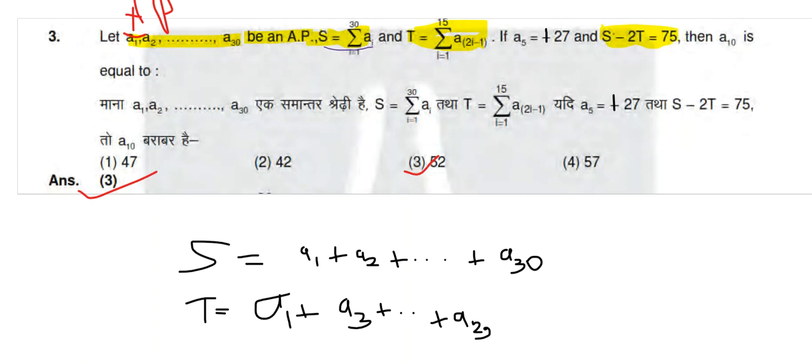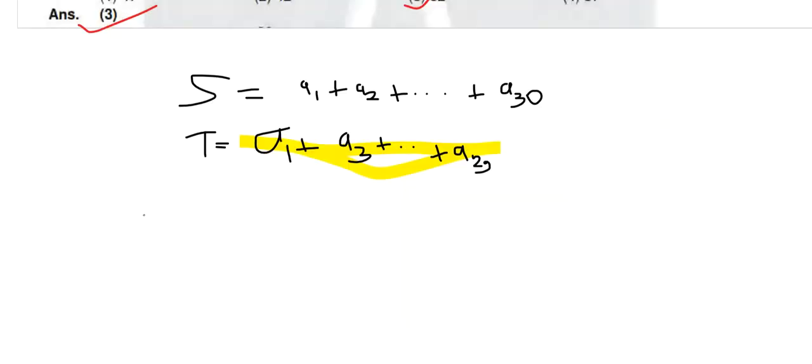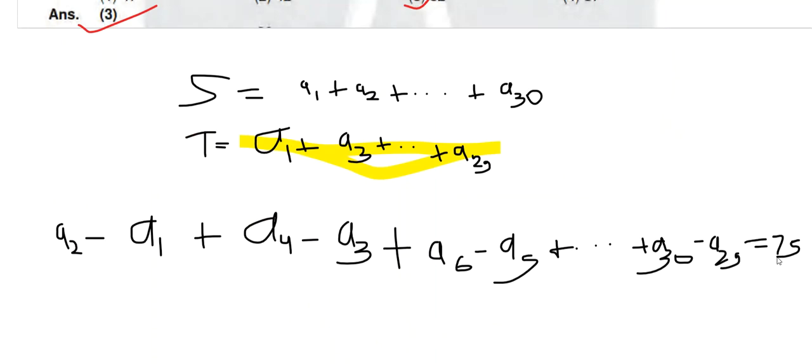Through this you can understand that this is the complete series and here we are subtracting twice the odd multiple of the series. After subtraction what can we get? 75. Now what are all these things? These are nothing but d, d, d, and d. d is the common difference in the arithmetic progression.